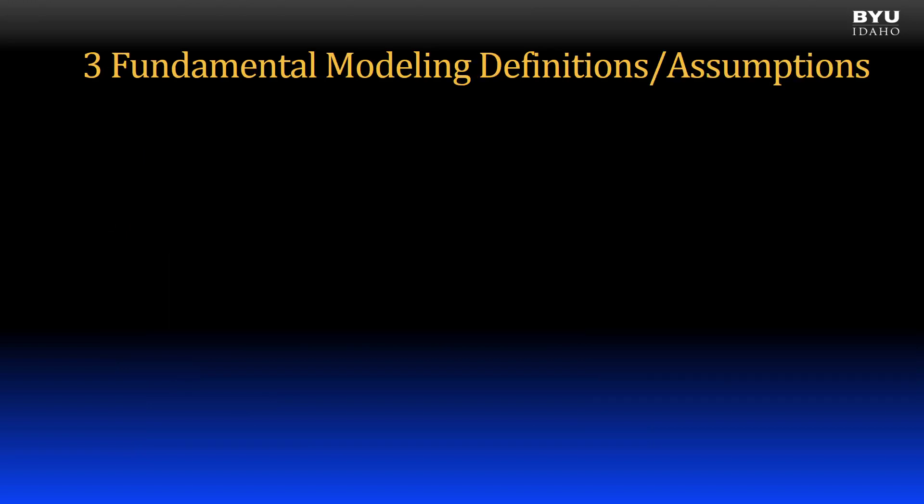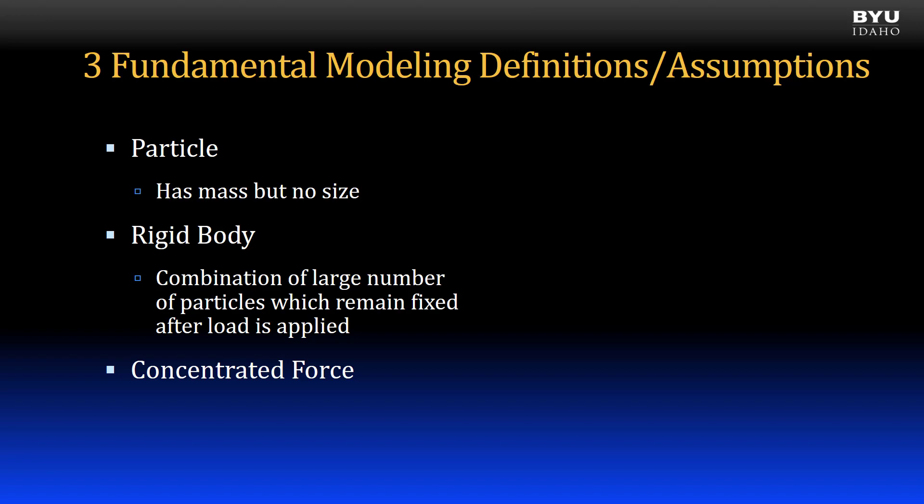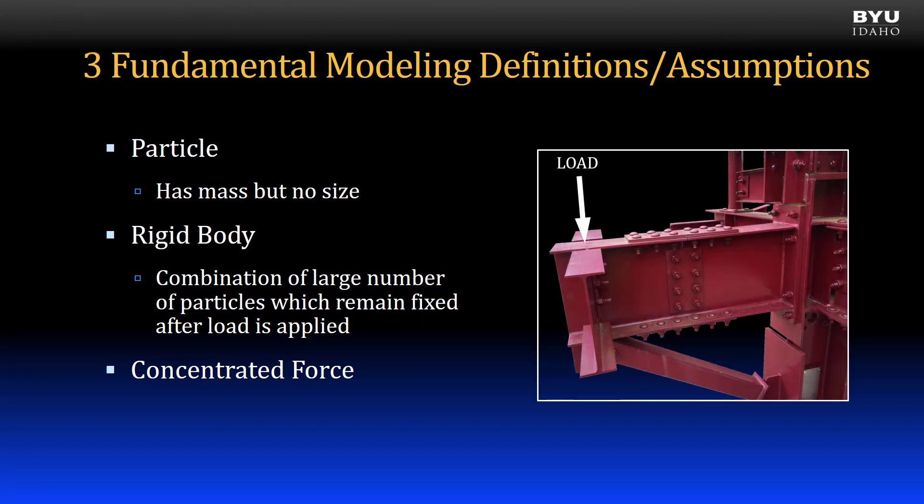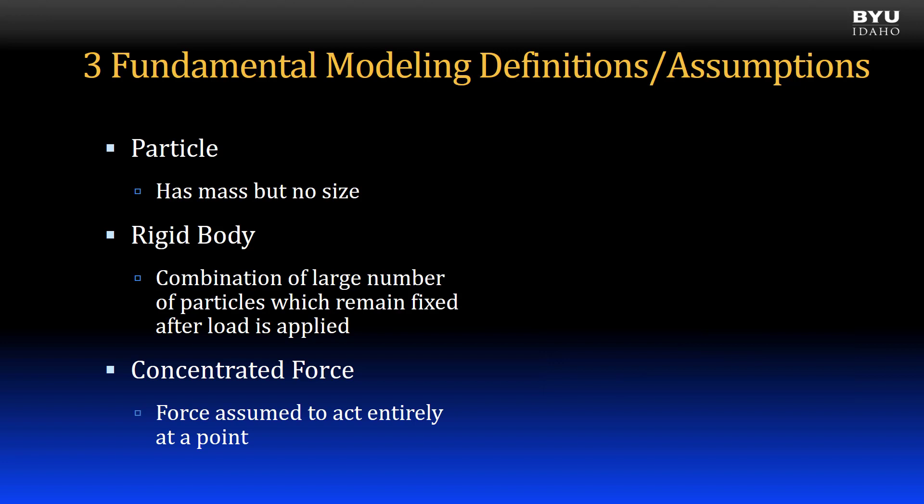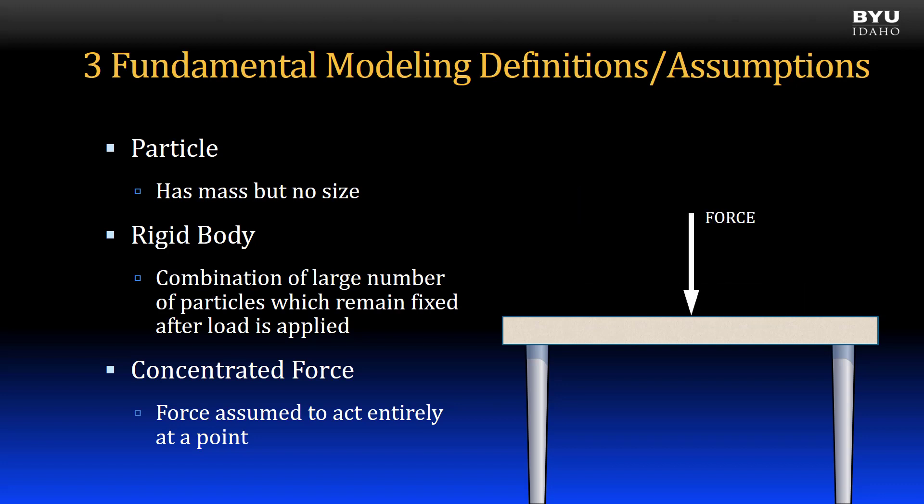As we begin our study of statics, it's important to understand some fundamental modeling definitions and assumptions. First, we have a particle. A particle has a mass but no size. Think of modeling the planet Jupiter in its orbit around the sun as a point. Next we have a rigid body. A rigid body is a combination of a large number of particles which remain fixed after a load is applied. In other words, there is no deformation or bending in a rigid body. Finally, we have a concentrated force, where we take a force that is spread over an area and assume that it acts at a single point.